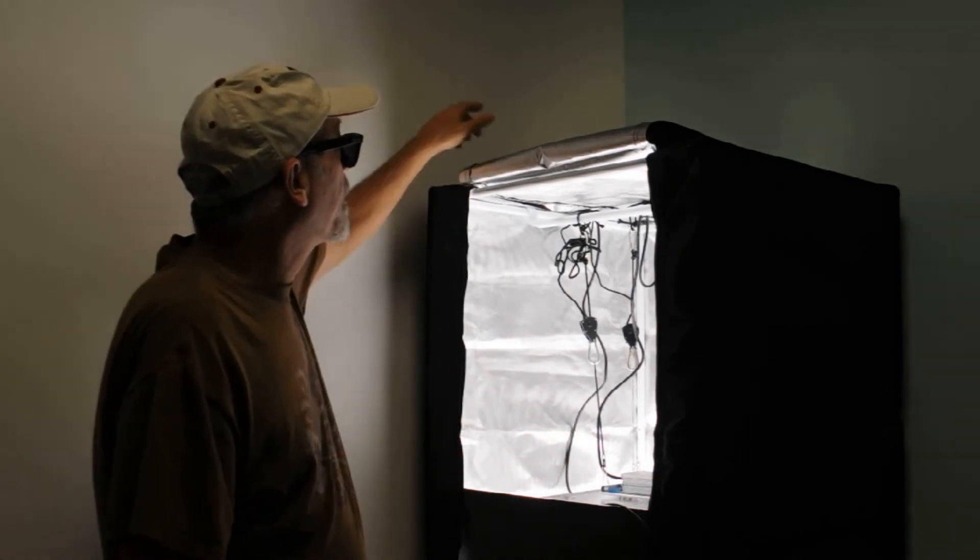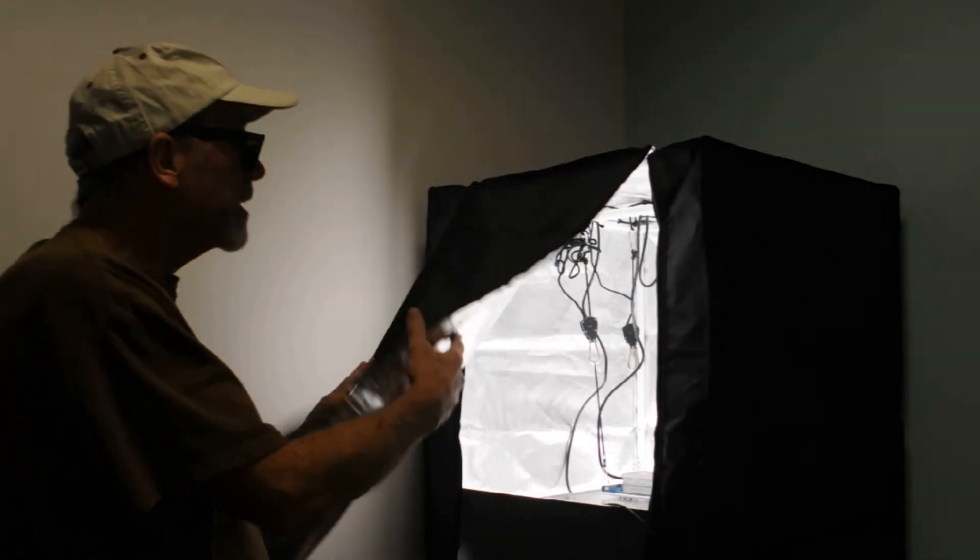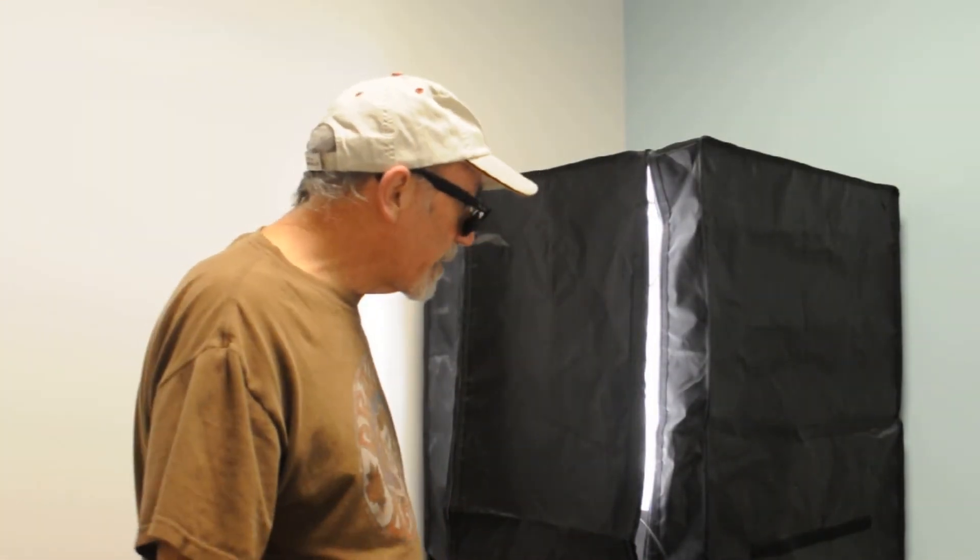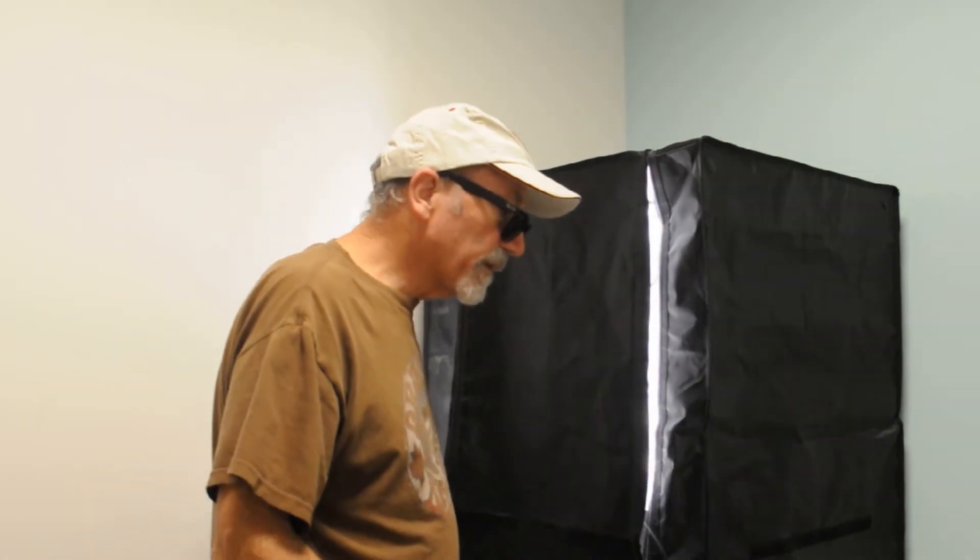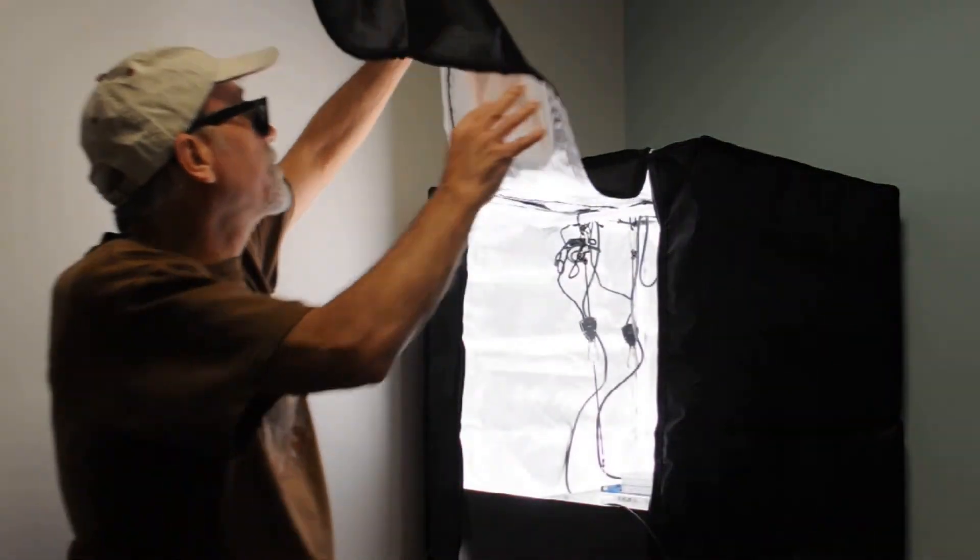Also, when we take our measurements, we lower the flap on the tent so we are confident that when we take our measurements that the readings are going to be very accurate. And we are ready to take those readings right now. We're going to take that all-important direct dead center measurement here, and I am really anxious to see how this light scores.